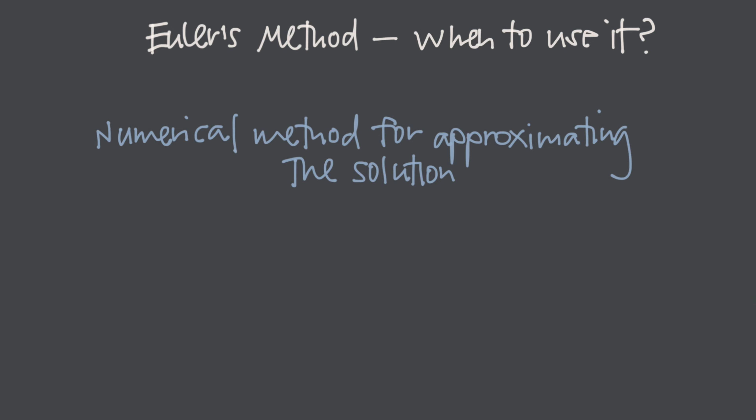When do we use Euler's method? We use it when we can't find an exact solution. After all, if we're using Euler's method to find an approximate solution, an approximate solution wouldn't be as desirable as an exact solution, so using Euler's method implies that we can't use another method to find an exact solution.